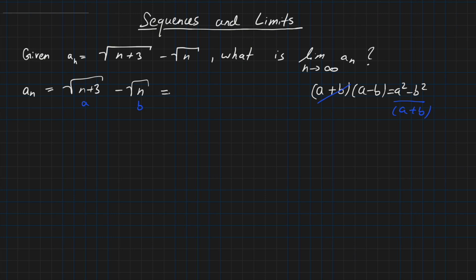And then we can apply this equation here right now to get n plus 3 squared, minus root of n squared over root of n plus 3 plus root of n, and we can simplify this much further.